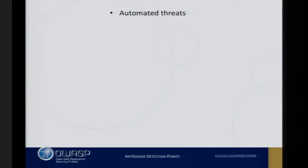Automated threats. I am a co-leader on the OWASP AppSensor project, which is about real-time attack detection and response in software applications — self-defending applications. One of the things I pondered on in that project was which were the best types of detection points for attackers. The idea is to put detection points in which identify the intent of a user as malicious before they manage to do something very bad — trying to detect people hunting for vulnerabilities before they can exploit them. But people are not just exploiting vulnerabilities; they're also doing other things to your applications.